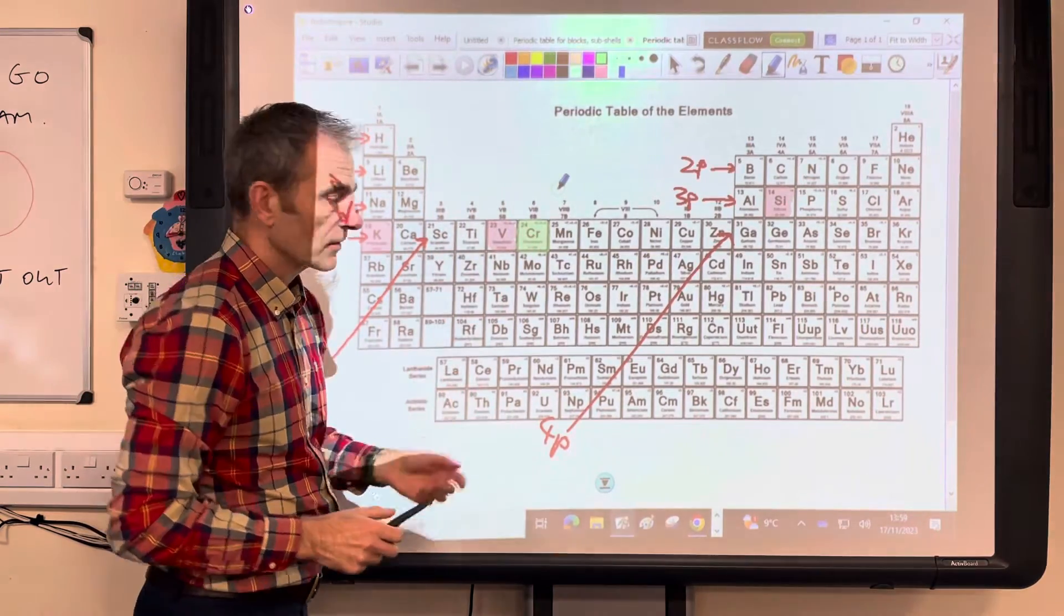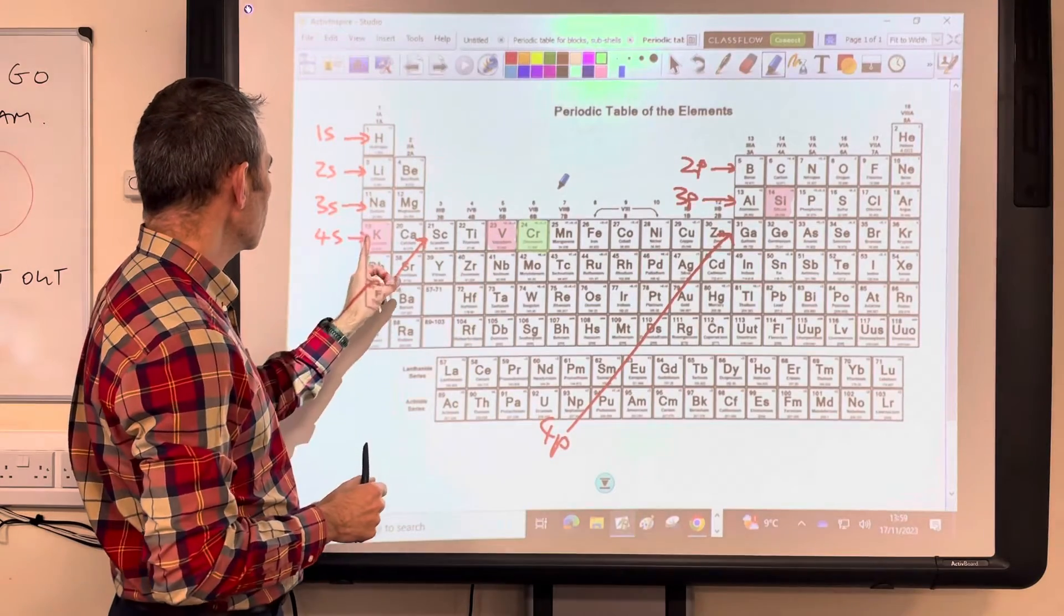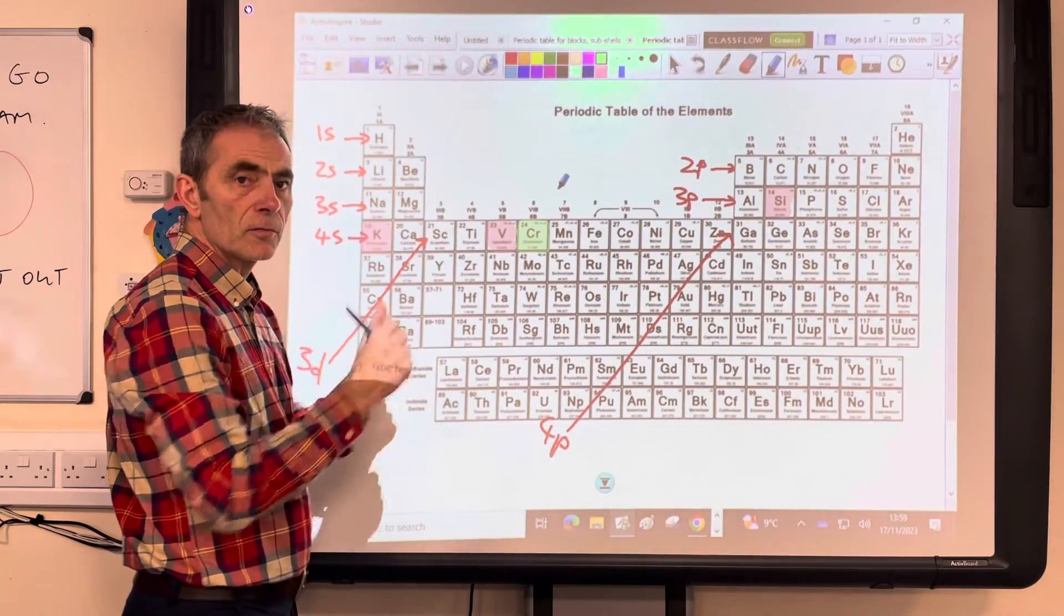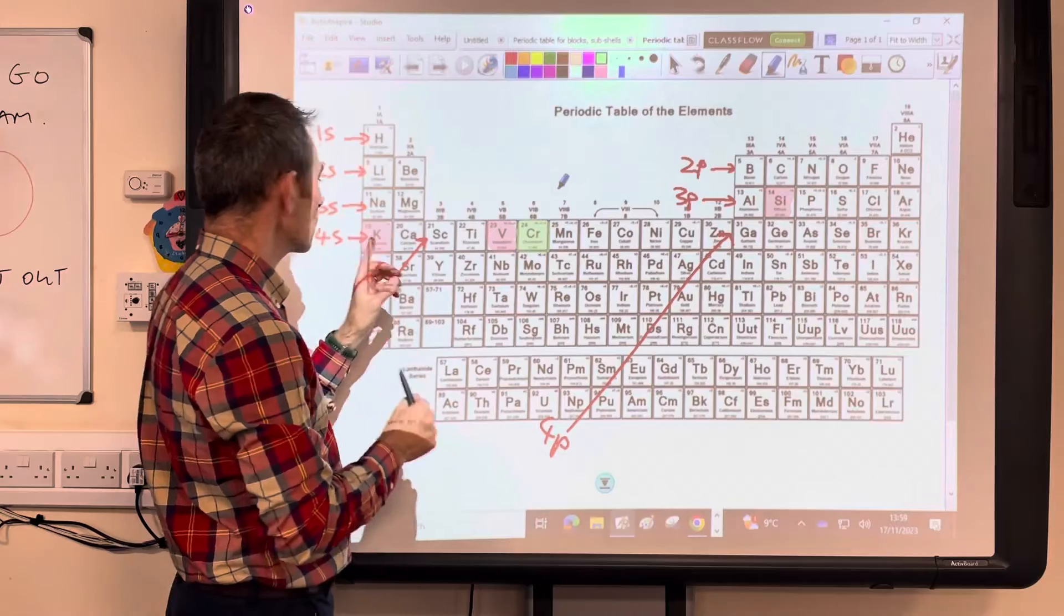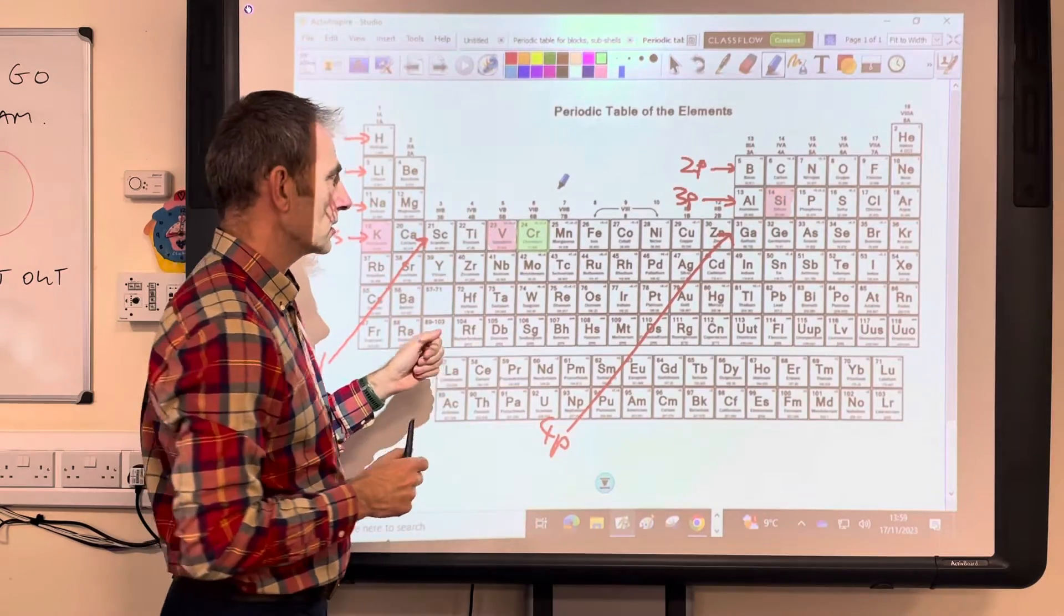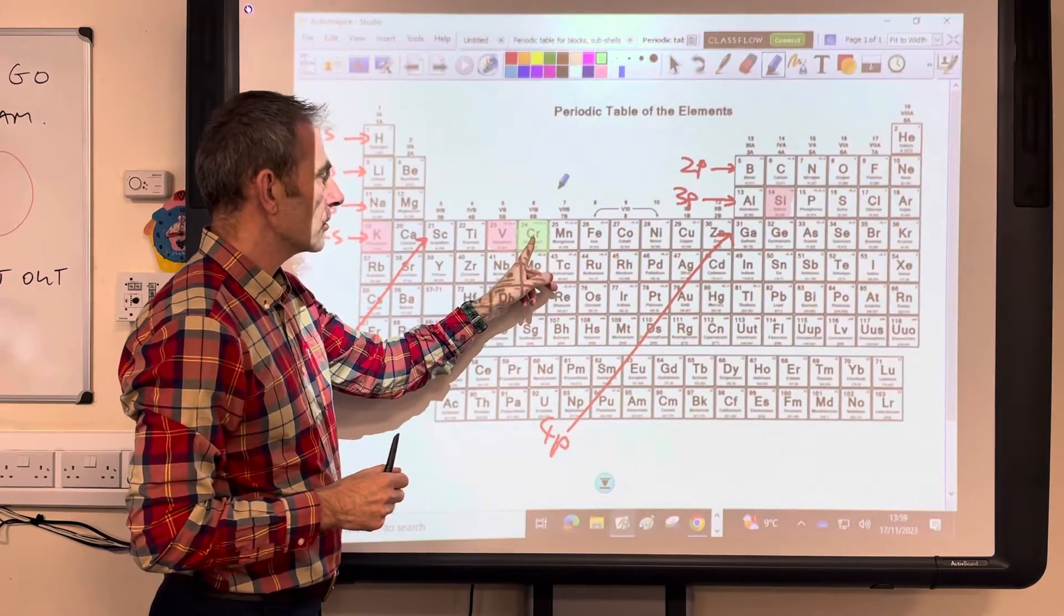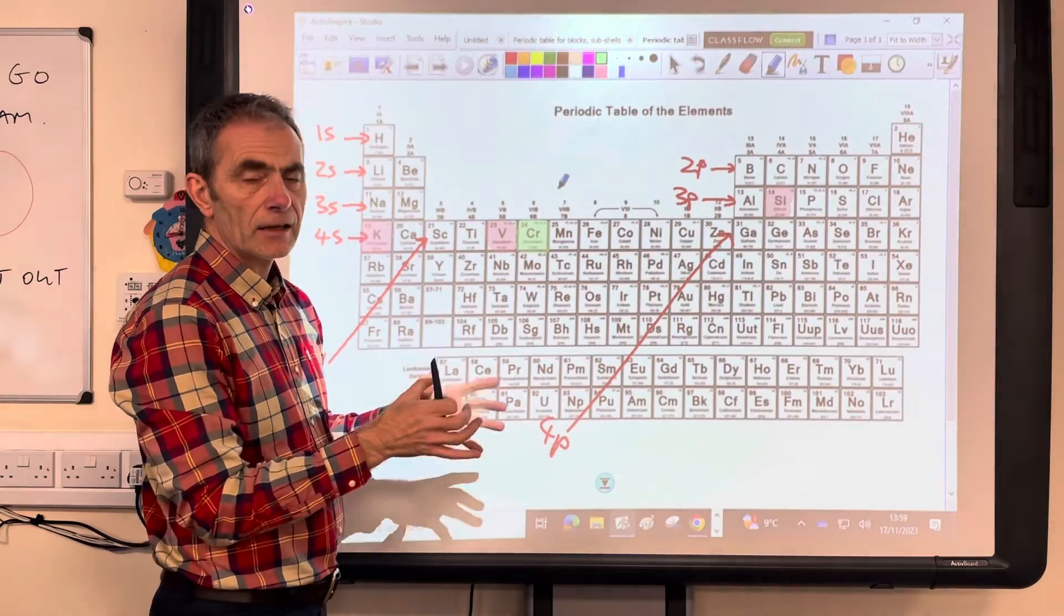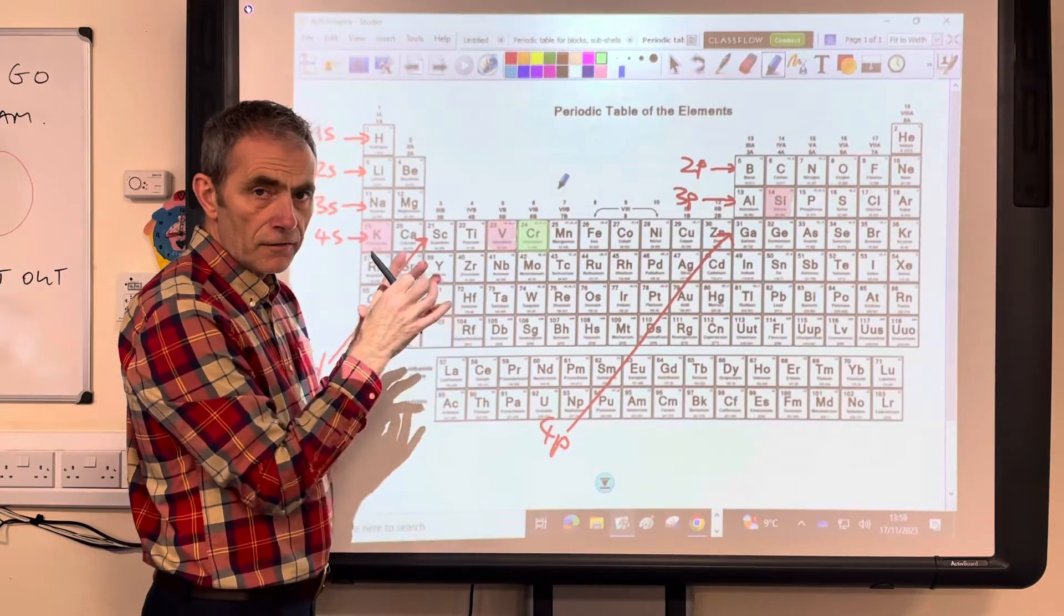It's not that. So what happens with chromium, one of the 4s electrons jumped up in energy, so it goes to 4s1, and the chromium becomes 3d5. So that's the first rogue one.